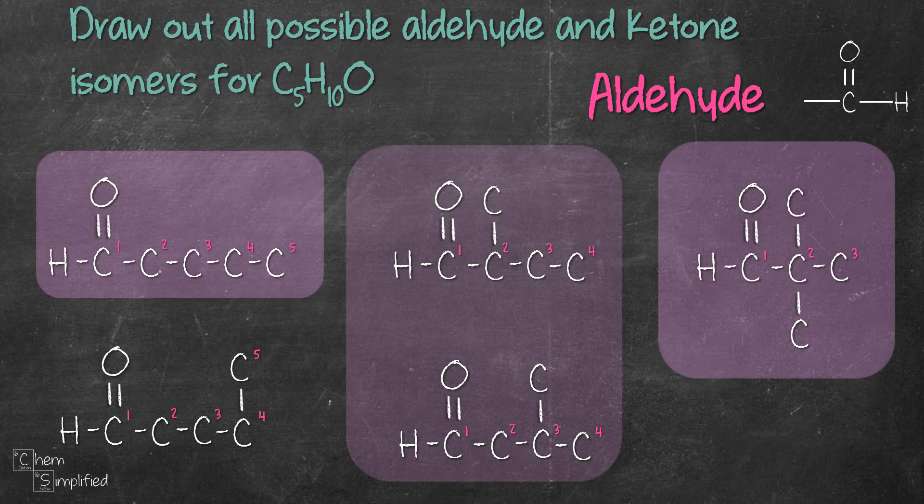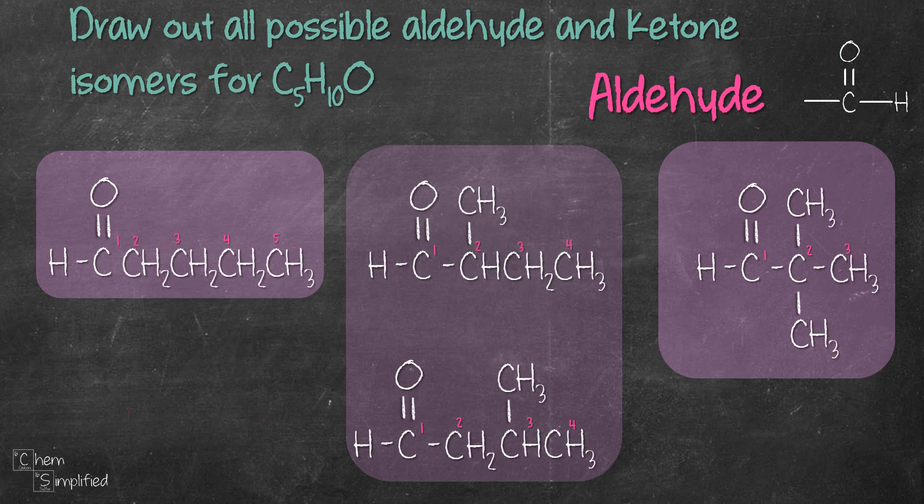We fill up with the appropriate number of hydrogens and that will give us these structures. Keep in mind that each carbon makes four bonds and be sure to check that each structure has ten hydrogens no more and no less.